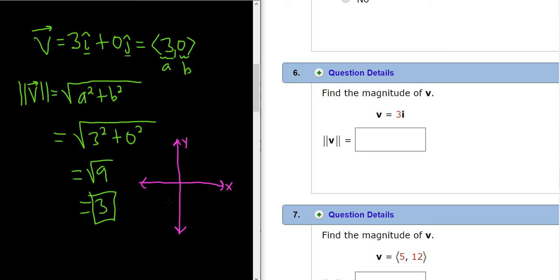To find the magnitude of this vector, all you do is graph it. v equals 3i-hat is this vector here. 1, 2, 3 - the vector starts at the origin, and its terminal point is right here. This yellow arrow is our vector.